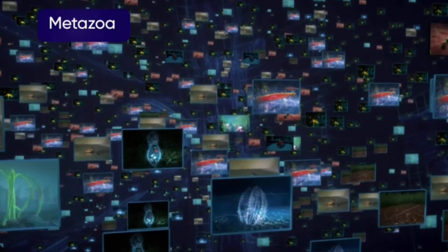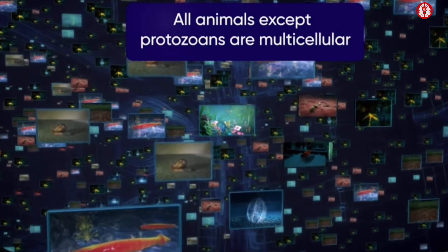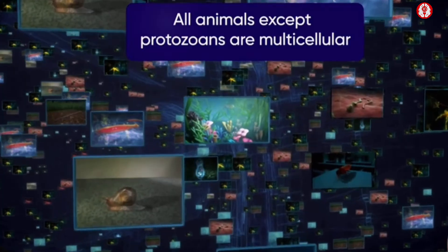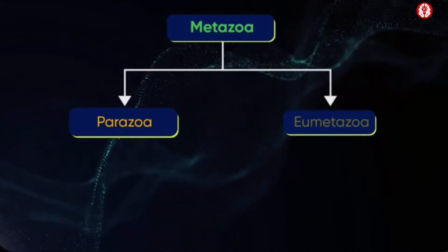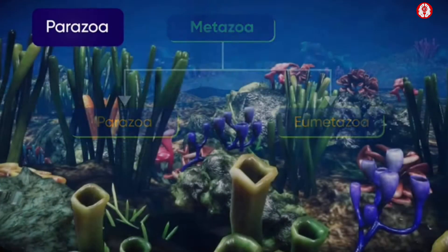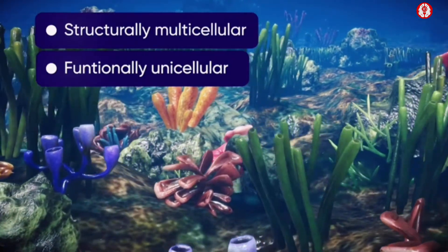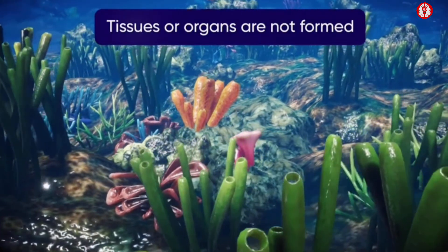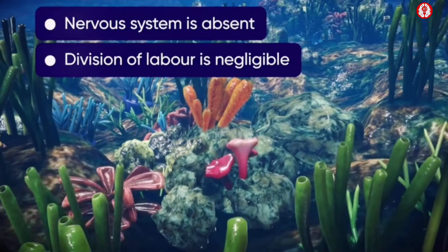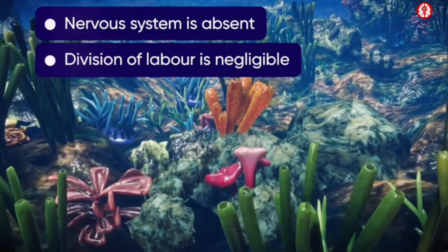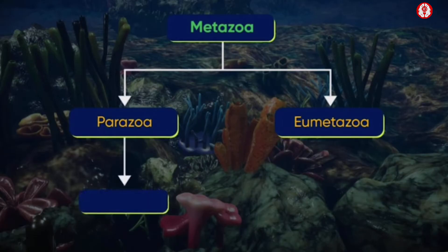All animals except protozoans are multicellular and are placed under the sub-kingdom Metazoa. Metazoa is divided into two divisions: Parazoa and Eumetazoa. Parazoa is a small group of animals that are structurally multicellular but functionally unicellular. Tissues and organs are not formed in these animals, and the nervous system is absent, so the division of labor is negligible.